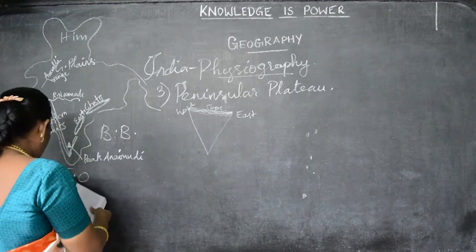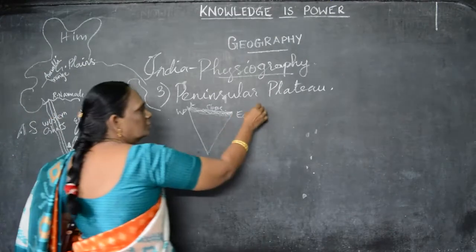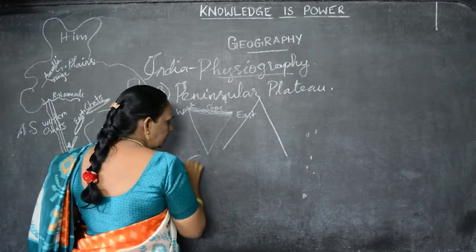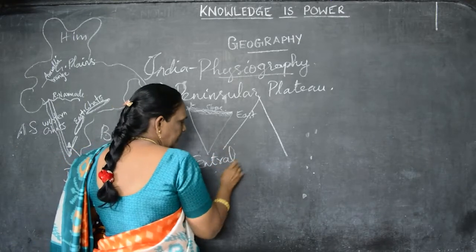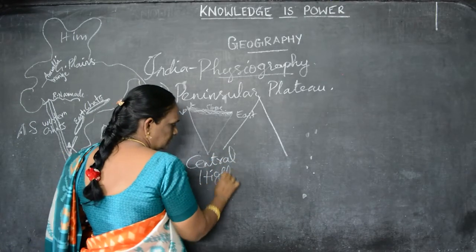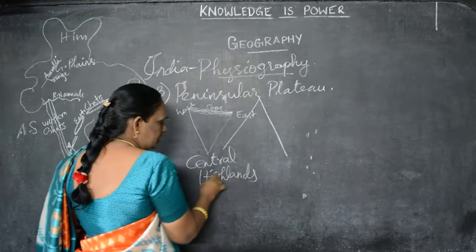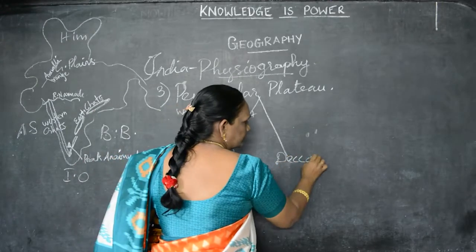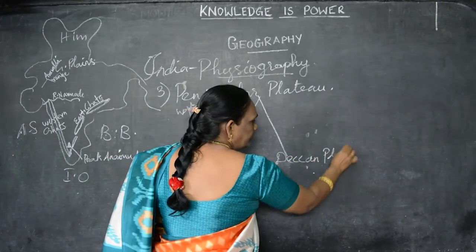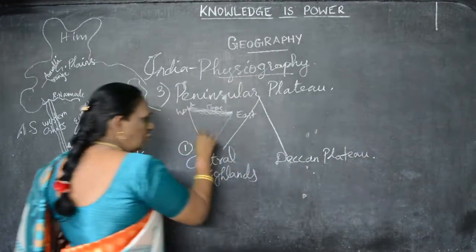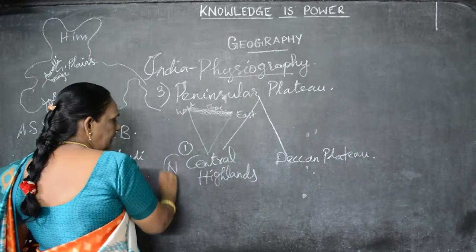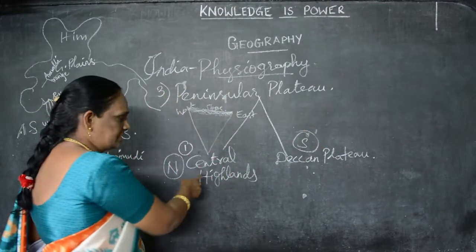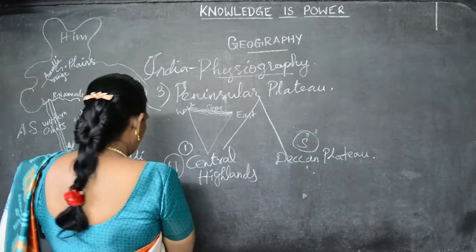The Peninsula Plateau is divided into two parts. The northern part is called the Central Highlands and the southern part is called the Deccan Plateau.